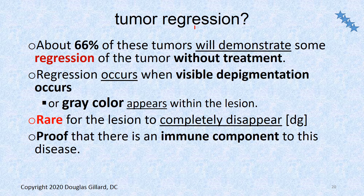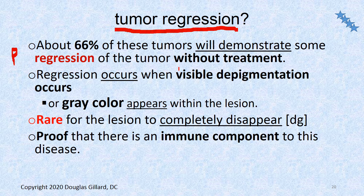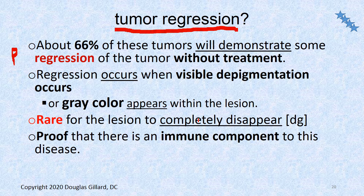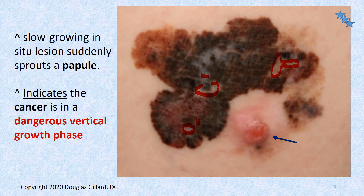Tumor regression can occur — about 66 percent of tumors will have some patchy regression — where the body's immune system attacks the tumor cells, leaving holes in them. This proves there is an immune component to this disease and explains why immunocompromised people are at increased risk. A gray color in the lesion can also indicate cells that are degenerating — the body is fighting the tumor. However, it's rare for tumors to completely disappear.